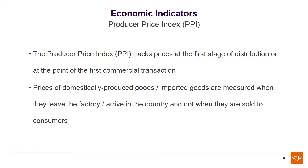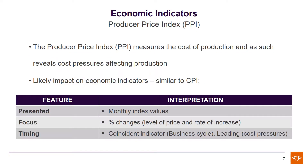This is the inflation that is related to the supply side or production. The Producer Price Index, PPI, tracks prices at the first stage of distribution or at the point of the first commercial transaction. Prices of domestically produced goods are measured when they leave the factory, and imported goods' prices are measured when they arrive in the country. PPI measures the cost of production, looking at the inflationary pressures exerted on the cost of input factors for the production process. Its likely impact on economic indicators is similar to CPI.